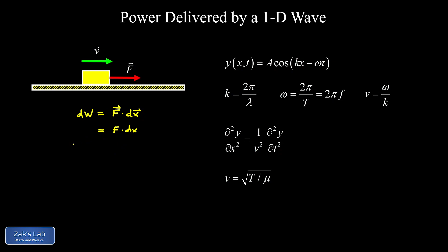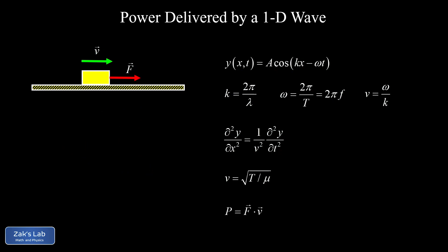Dividing both sides by dt, we find dw/dt = F times dx/dt, which is just the velocity. So we arrive at: power equals force times velocity. More generally, if the force and velocity vectors are not aligned, you still have a factor of cosine θ, so this is properly written as a dot product. That completes the prior results we need for deriving the power delivered by a one-dimensional wave.